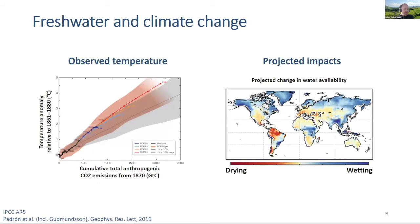To illustrate this: on the left-hand side we have the relationship between cumulative anthropogenic CO2 emissions and expected temperature increase, and on the right-hand side an example of projected changes in water availability at the end of the century. We see that in several regions on the globe, significant changes in water availability are expected, which might have significant effects on the global carbon cycle through these planetary scale feedbacks.